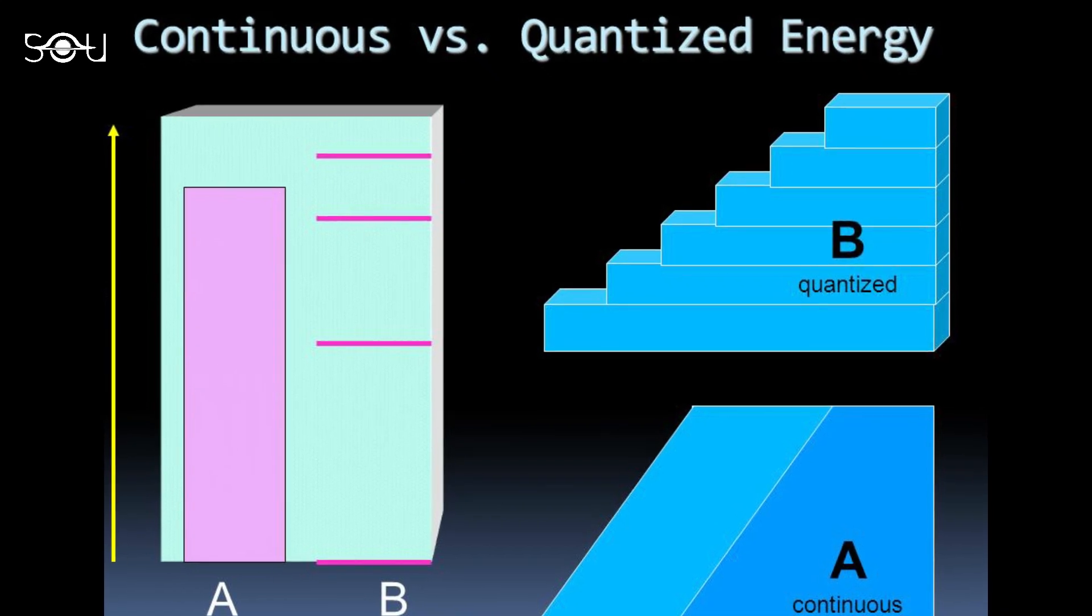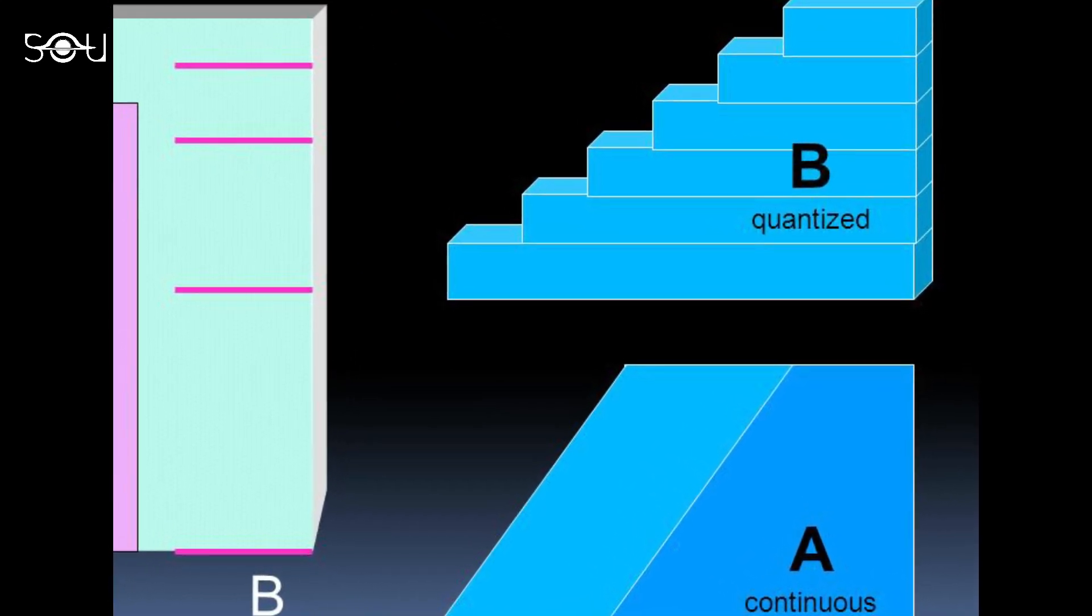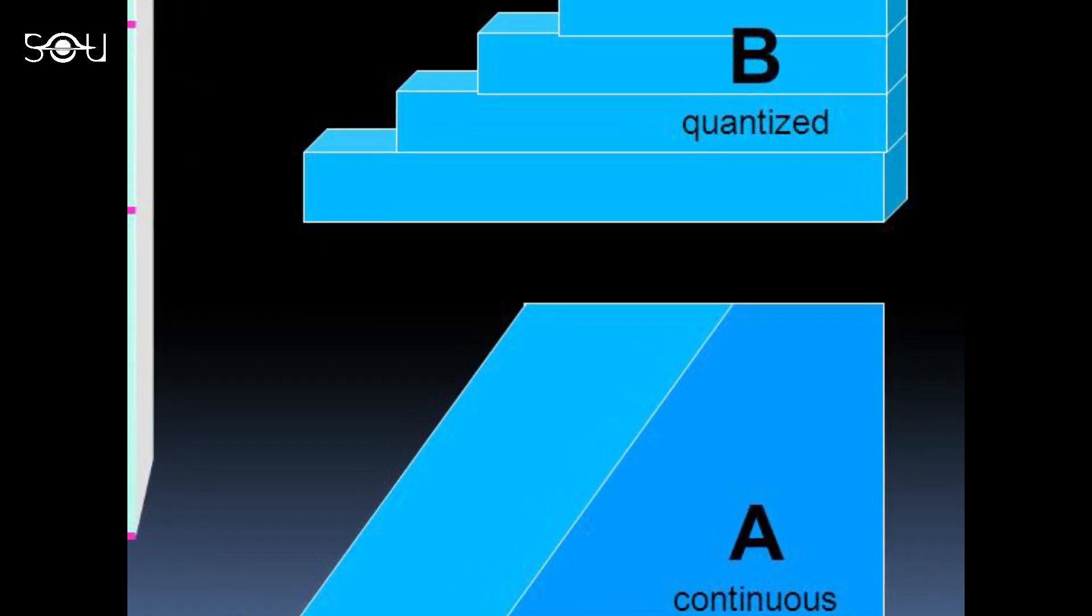He said energy in the form of light can only be emitted in discrete amounts. It cannot be emitted continuously. So 1.4 units, 3.5 units, 6.2 units, etc. were not allowed. Planck did not realize the importance of this hypothesis.